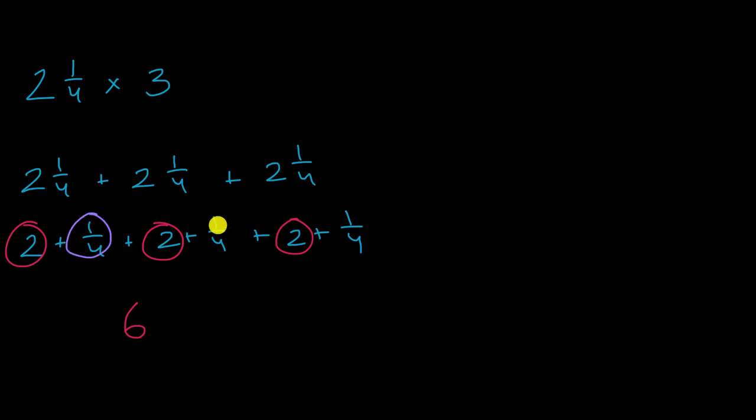and then if I were to take one-fourth plus one-fourth plus one-fourth, how many fourths do I now have? I have three-fourths. So it's going to be six plus three-fourths or I could write this as six and three-fourths.